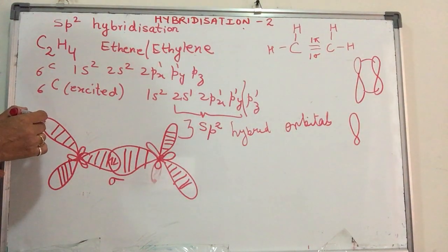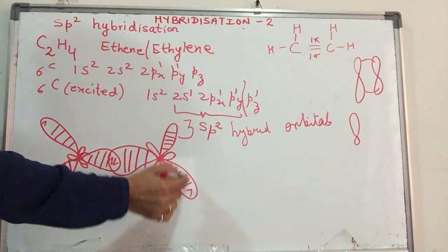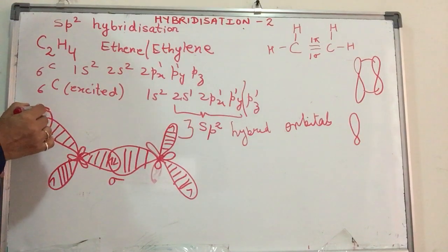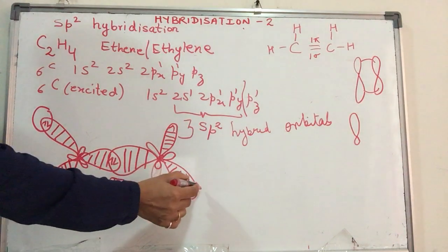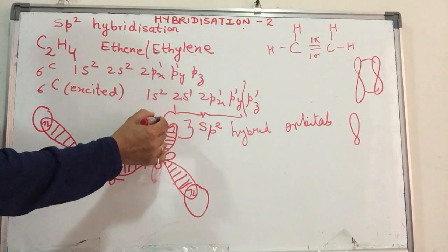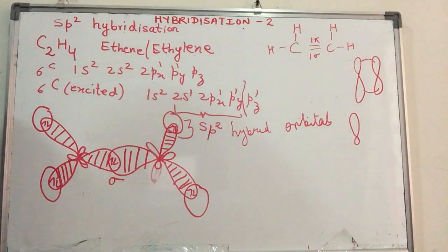Now we have one unpaired electron, one unpaired electron, one unpaired electron on each of the hybrid orbitals. So a hydrogen atom comes, there is head on overlap, head on overlap, mind you. Hydrogen is not undergoing hybridization. It is only carbon which is undergoing hybridization. And that too only when it has to undergo bond formation.